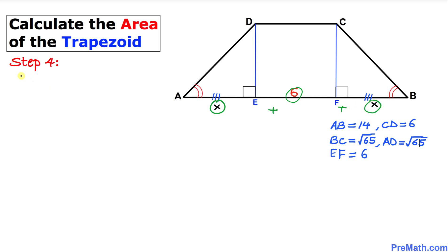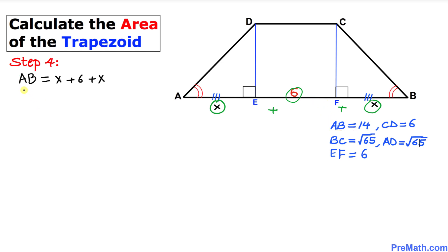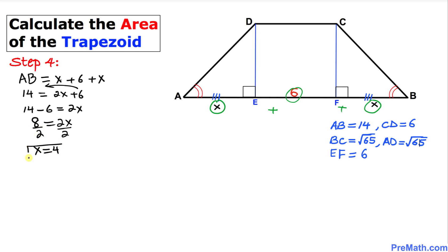So AB equals X plus 6 plus X. We know AB is 14, so 14 equals 2X plus 6. Moving 6 to the other side gives 14 minus 6 equals 2X, so 8 equals 2X. Dividing both sides by 2, X equals 4.